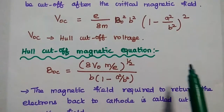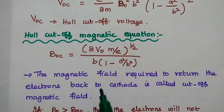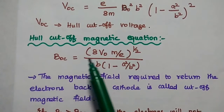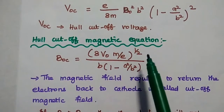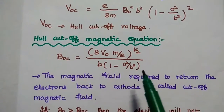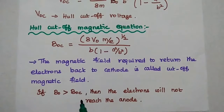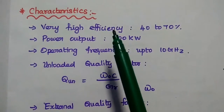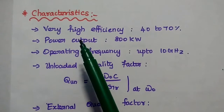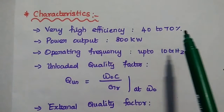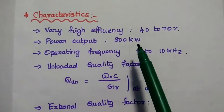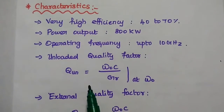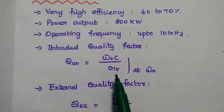Next is the hull cutoff magnetic equation, which represents the magnetic field required to return the electrons back to the cathode. It is denoted as B_OC, which equals (8V₀ × m/e)^(1/2) divided by B × (1 - A²/B²). If the magnetic flux is greater than the critical magnetic flux, then the electrons will not reach the anode.